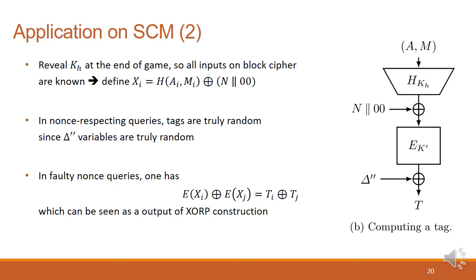Next step is to compute the tag. To ease the proof, we reveal hash key at the end of the distinguishing game, so all inputs on block ciphers are known. For example, let Xi be the input on block cipher in i's query. In nonce-respecting queries, tag Ti are truly random since delta double prime are also truly random. However, in faulty nonce queries, delta double prime is not any more random, since two queries should share same delta prime if their nonces are the same. Therefore, instead of using the randomness of the double prime, one can compute the difference between the block cipher outputs, which can be seen as an output of XORP construction. Then, after applying the result of pseudo-randomness of XORP outputs, we can also conclude that all tags are generated randomly in faulty nonce queries.